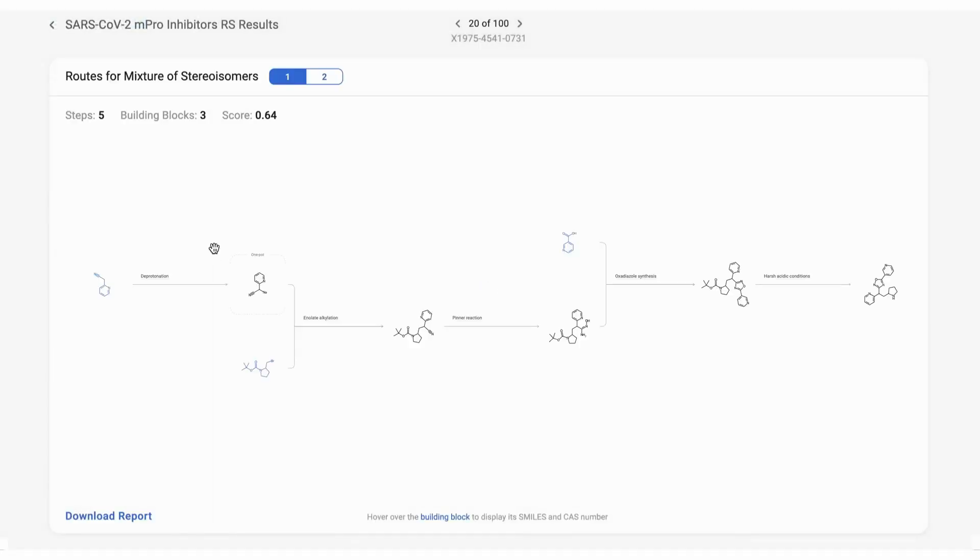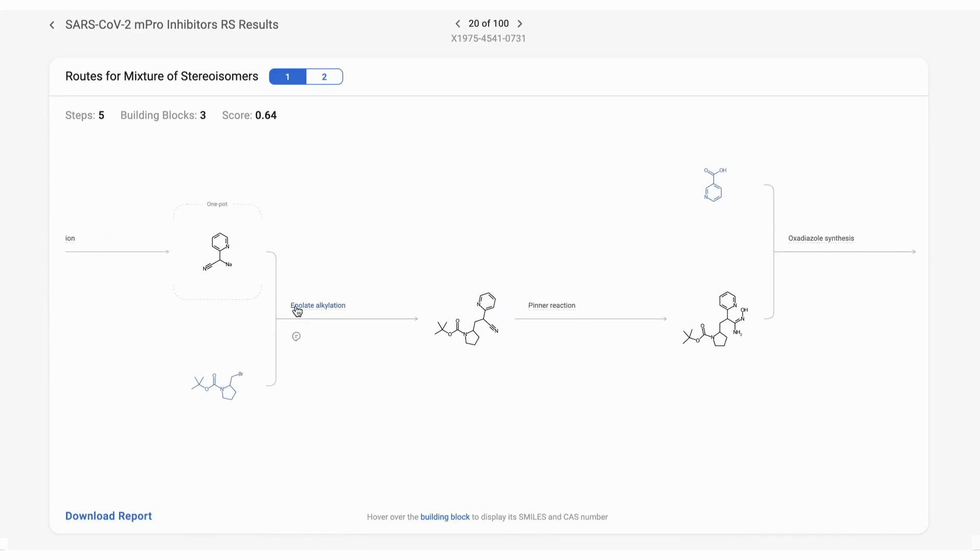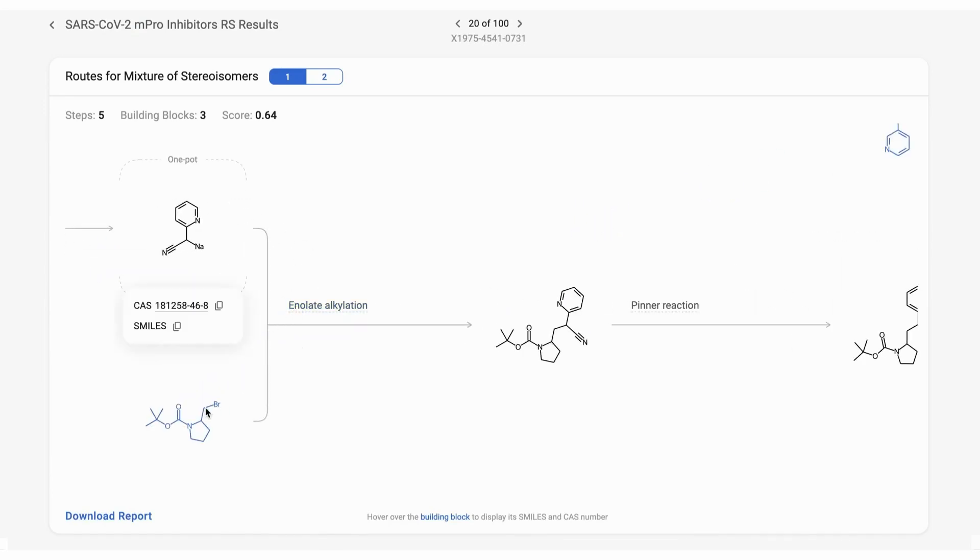The outcome is elegantly summarized in an easily digestible and friendly UI. Navigate by dragging the mouse and zoom in or out by scrolling. Building blocks are highlighted in blue, and hovering over them displays their CAS registry numbers or SMILES string.